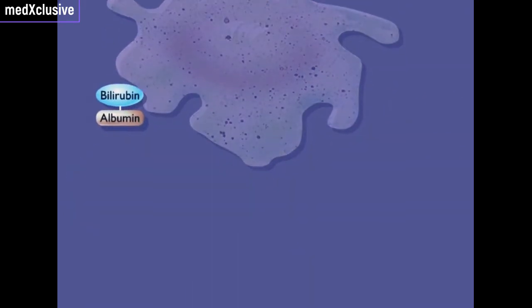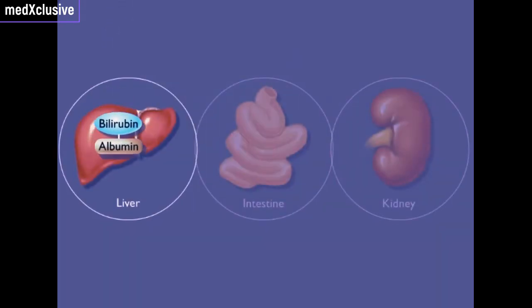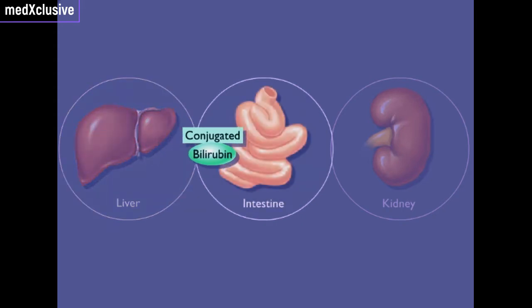Free bilirubin is transported by albumin in the blood to the liver. Liver cells make conjugated bilirubin, which is excreted as part of the bile into the small intestine.